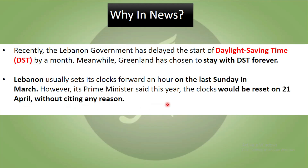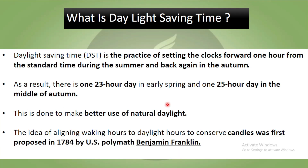So what is this Daylight Saving Time? It is a practice of setting the clocks forward one hour from the standard time during the summer, and in winters the clock is set back one hour to standard time. As a result, there is a 23-hour day in the early spring or summer seasons, and a 25-hour day in the middle of autumn.